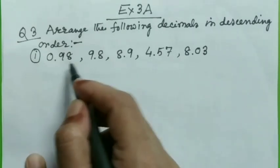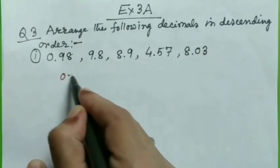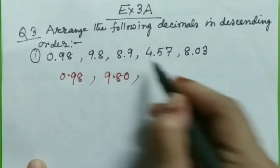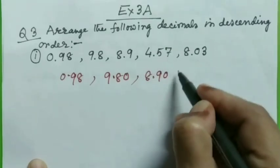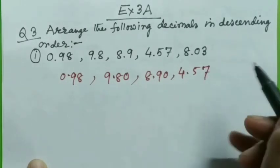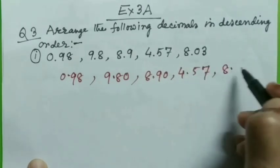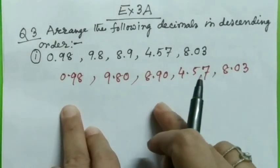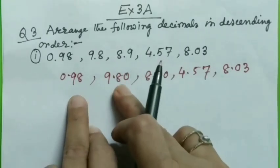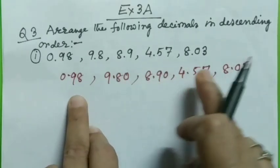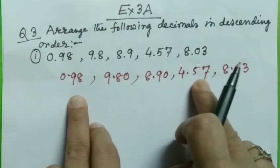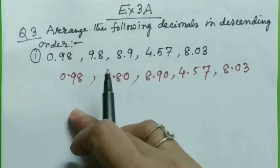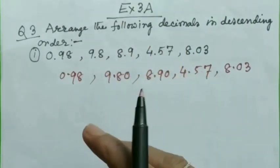I will change it. So I have to have 0.98 and this one will be 9.80. This one will be 8.90. This one is already having two numbers and this one also with two decimal places. Now you see, look at this. All numbers having same number of digits in the right hand side of the decimal point, that is equal decimal places.